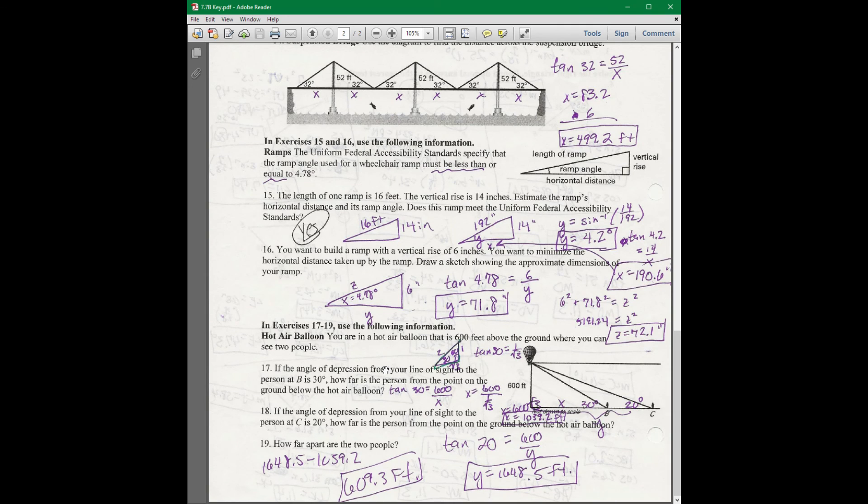And then 17 through 19 is talking about this picture with the hot air balloon. This is like the problem with the hikers. Don't worry about this. Again, we didn't learn the special right triangles yet. So if you had decimals for that, that's okay. You get 1,039.2 feet. And then you would subtract the two answers. Don't worry about 17 through 19 a whole lot because I said we didn't learn about the special right triangles yet.